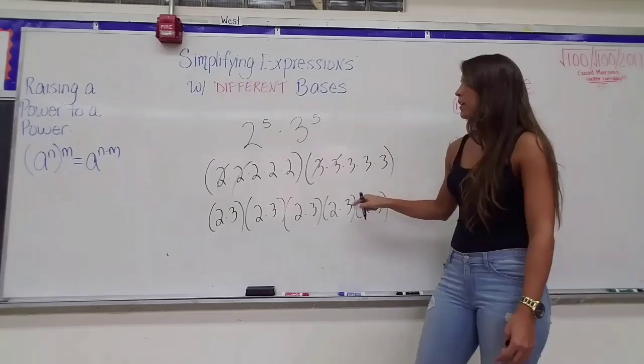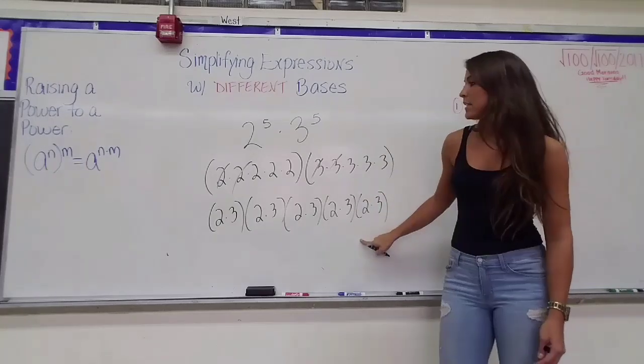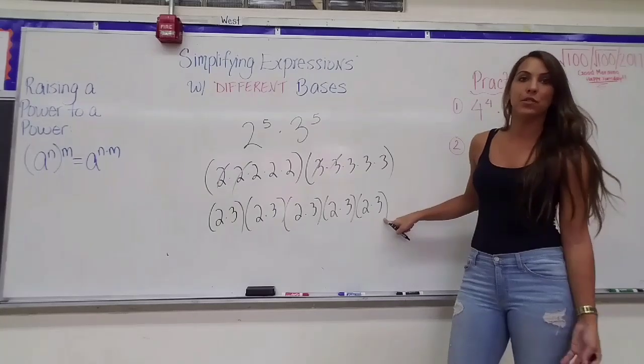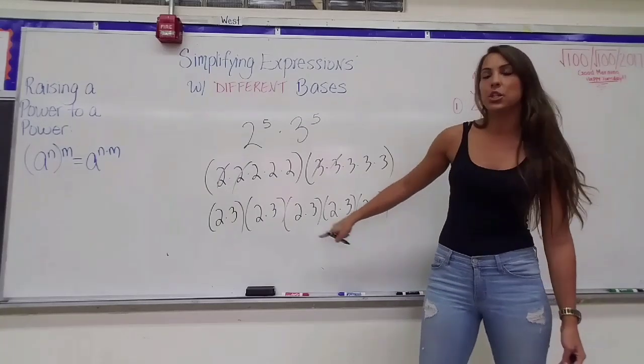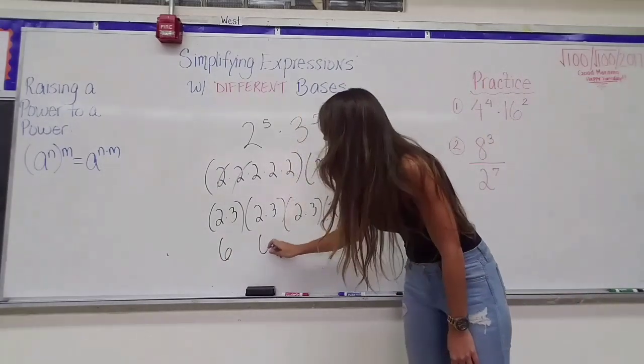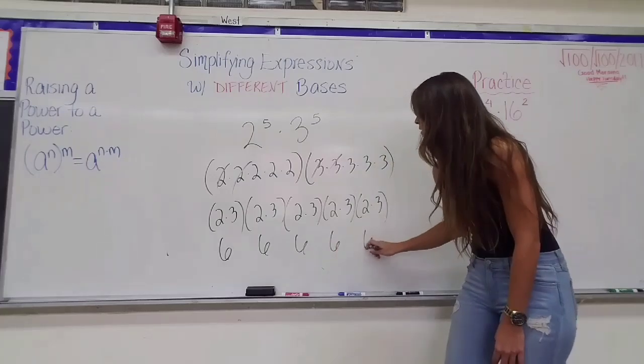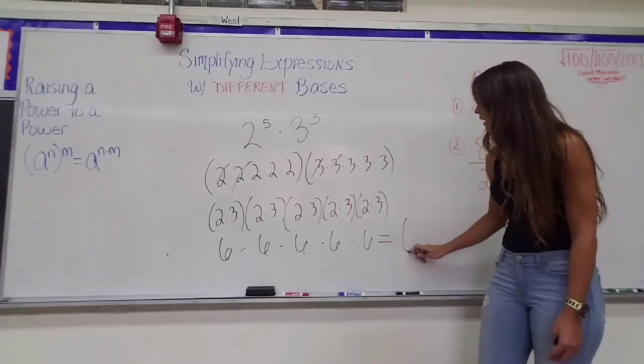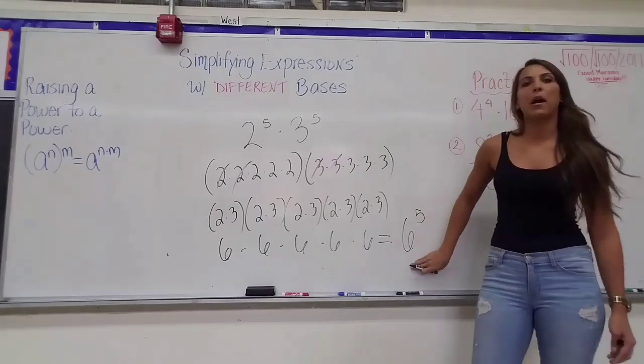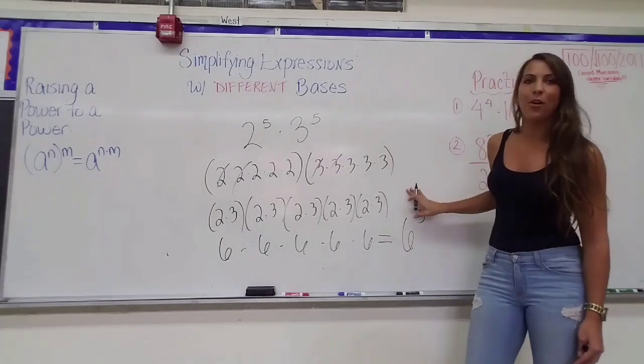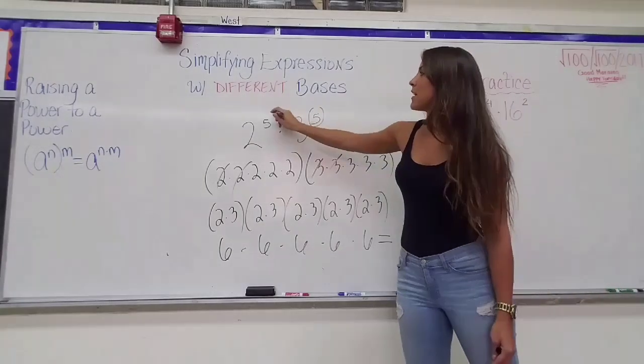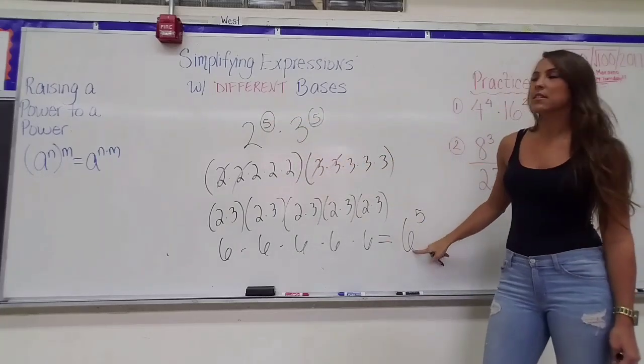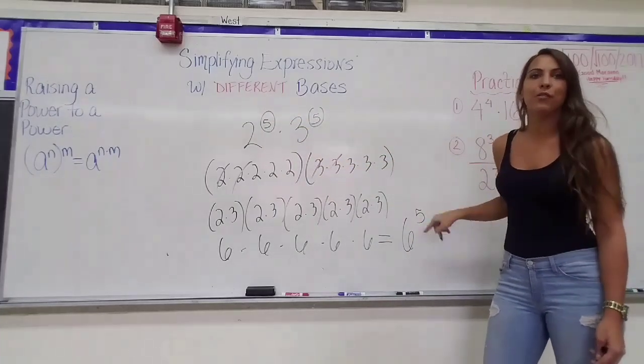When I rearrange it in this order, you can see that there are 1, 2, 3, 4, 5 parentheses of 2 times 3, and of course, each parenthesis with a 2 times 3 is a 6. So each of these 6's are getting multiplied by each other, so all of this ends up being 6 to the 5th power. But instead of doing all that work, if you recognize that it's the same exponent, multiply the bases, 6, and keep that exponent, 5.